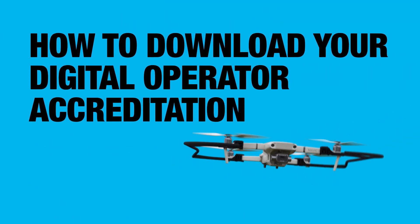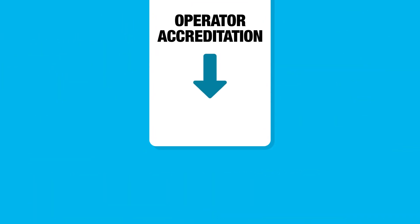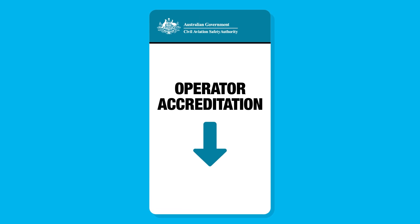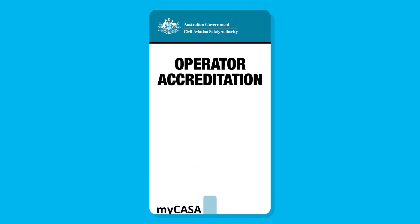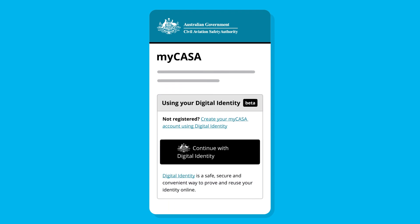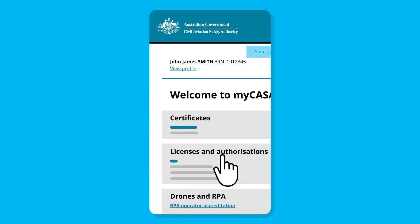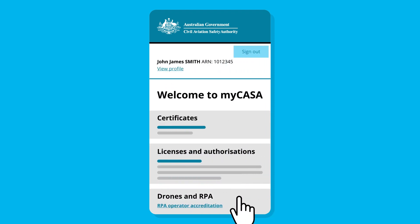Once you've passed your online quiz, you can download your operator accreditation onto your phone using MyCasa. Simply sign into your individual MyCasa account on your phone. Under Drones and RPA, navigate to the RPA operator accreditation.